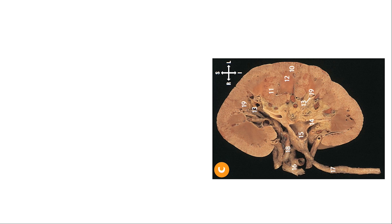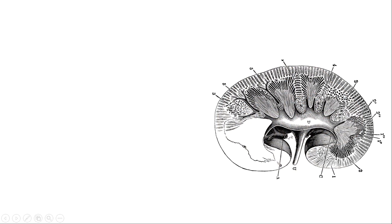In this coronal section, we can see the renal pyramid and the cortical area. This schematic diagram shows the relationship between the medulla and the cortical area.